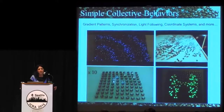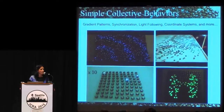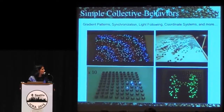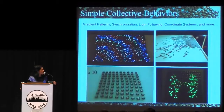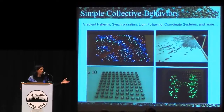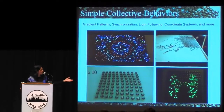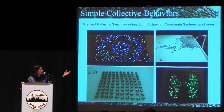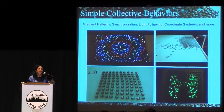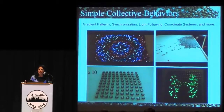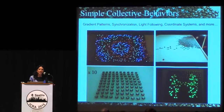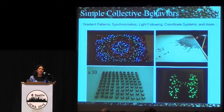Here are some examples of collective behaviors on the kilobot robots. We can do pattern formation, coordinate formation, classic things like firefly synchronization, and light following. If you have all of these basic behaviors, you can kind of control space, time, localization, and movement. All of these things together give you a pretty good library of algorithms to compose.